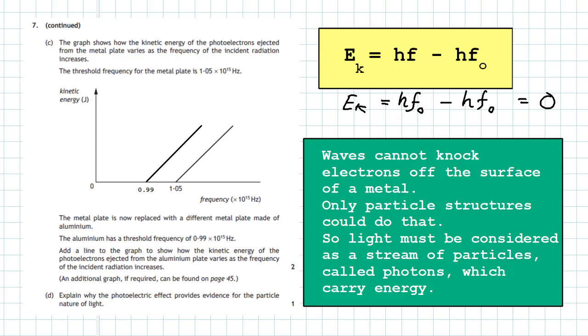Waves - if radiation has to be considered as a waveform - then waves cannot knock electrons off the surface of a metal. Only particle structures could do that. So in order to explain the photoelectric effect, light must be considered as a stream of particles called photons, or bundles of energy. These photons carry energy and they're like particle light structures. It's the only way in which electrons can be knocked off the surface of a metal: if we consider that radiation light is of a particle nature. We call those particles photons, and the energy the particles carry depends on the frequency of the light. That's what won Albert Einstein his famous Nobel Prize.